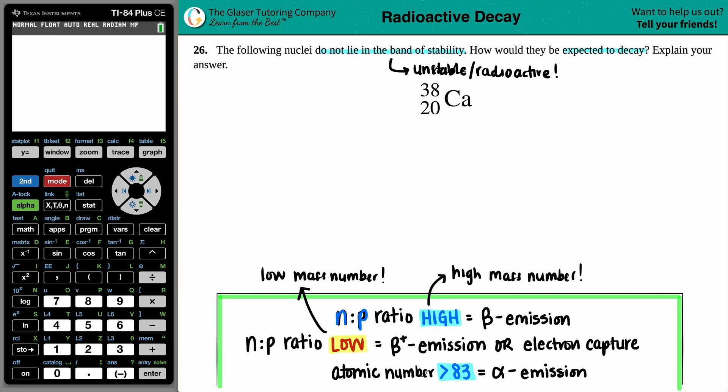But now the question is, how am I going to know whether the mass number, and remember, that's always the higher number that's given on the nuclei information. So in this case, the mass number is 38. How am I going to know if that is roughly high or low?